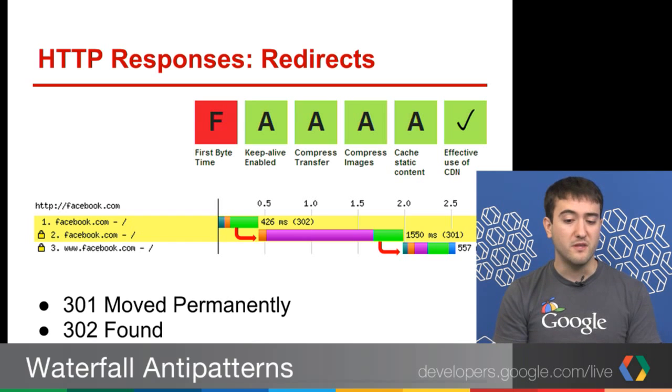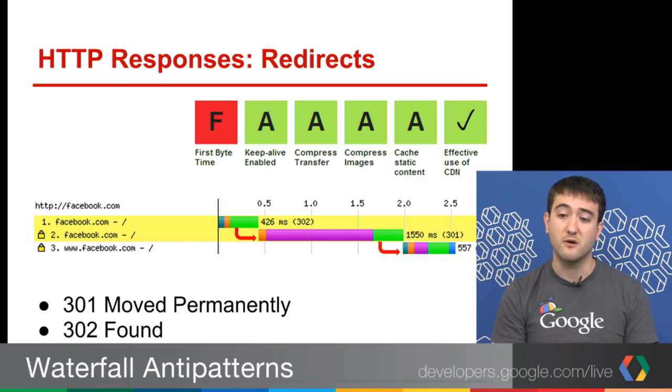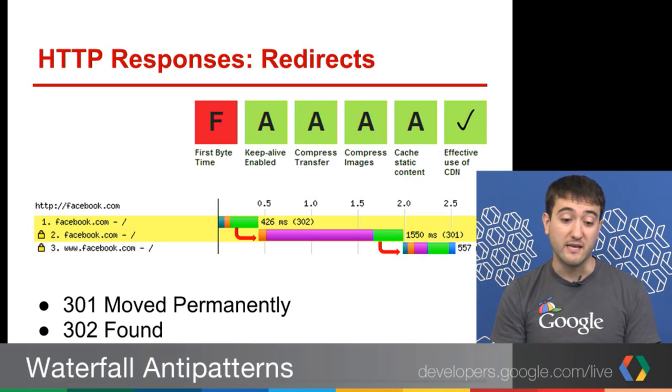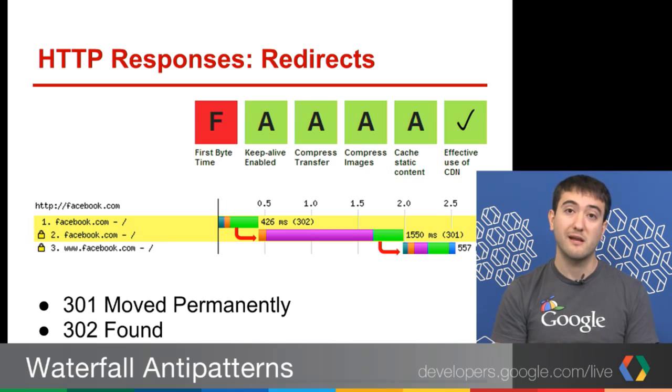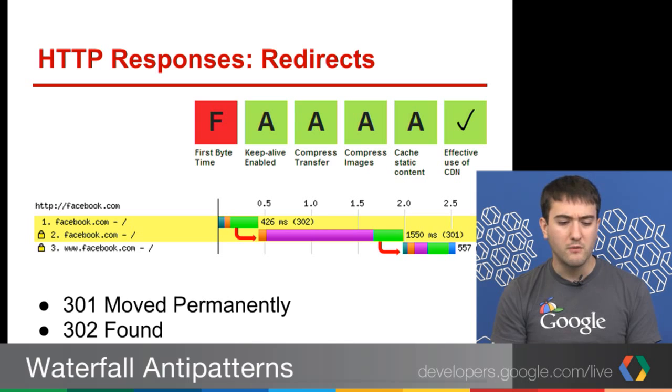We see that after all is said and done, the start offset for the third request is about two seconds. Facebook is probably doing this deliberately to funnel people to HTTPS www. They've since improved it so that request 1 does a 301 directly to request 3, so instead of loading at two seconds, request 3 in theory should load at half a second. That 301 moved permanently is just saying you should cache this redirect because you should not make this request again in the future — so hitting facebook.com over HTTP should redirect on the client side to HTTPS www.